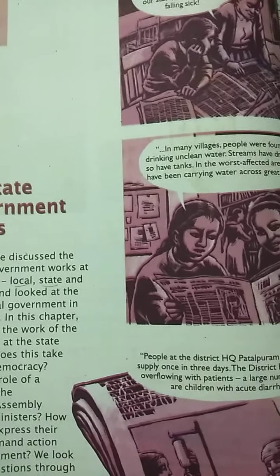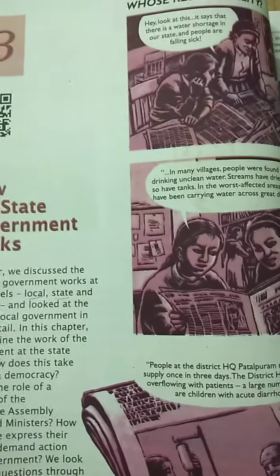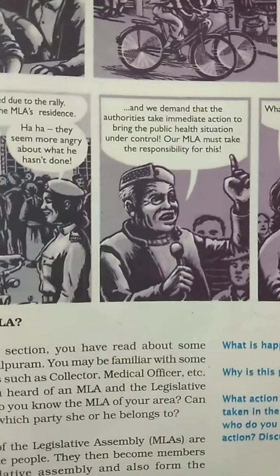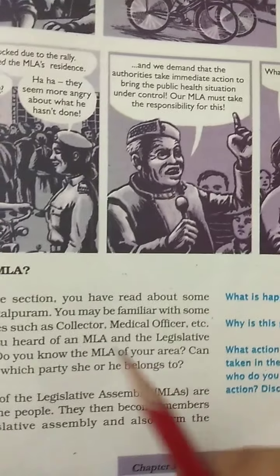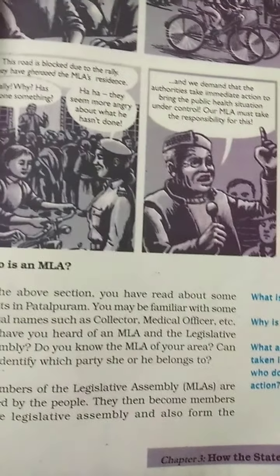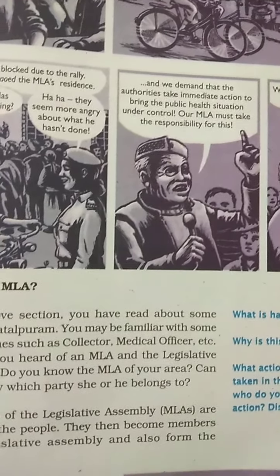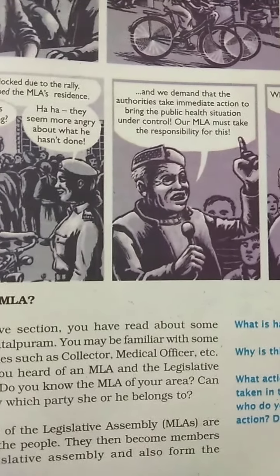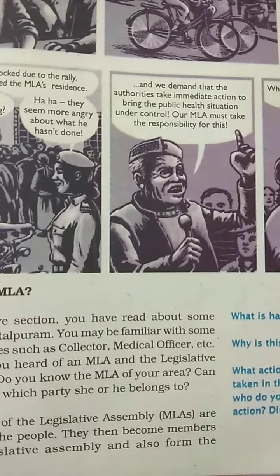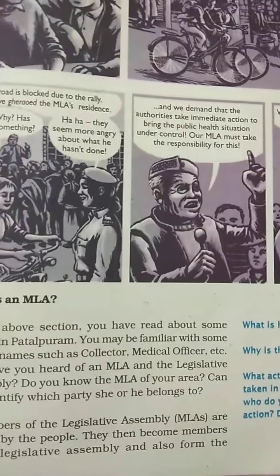Hello students, let's begin today's lesson from Social and Political Life, Civics, 7th standard, third lesson: How the State Government Works. The government works at three levels — local, state, and national level.